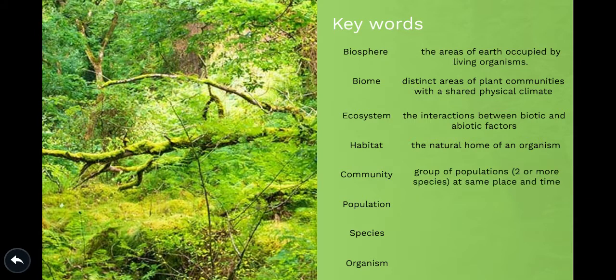Community. Community is the group of populations, two or more species to make up a community at the same place at the same time. So this can be about a plant community. It can be about a community of animals. It can be about a community of plants and animals. And we'll study communities as we go through the unit.